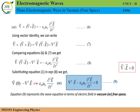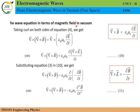Now, both sides have a minus sign, so the minus terms cancel. This gives: del-squared E equals epsilon-zero mu-zero dou-squared E by dou t-squared equals zero. This is the wave equation of the electromagnetic wave in vacuum for the electric field. Next, we derive the wave equation in terms of the magnetic field in vacuum.